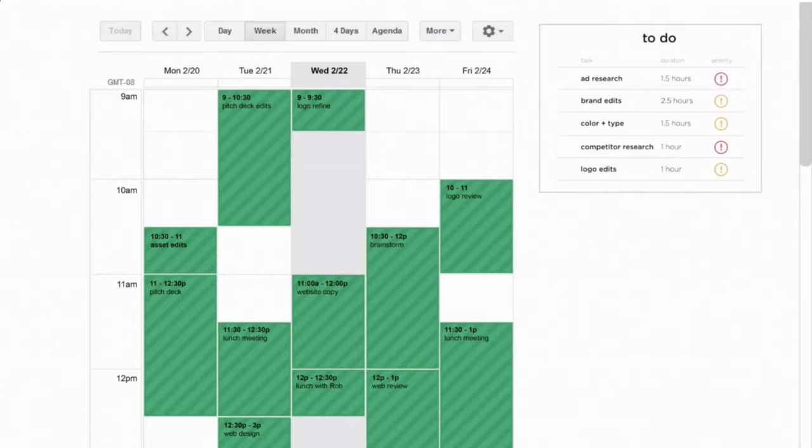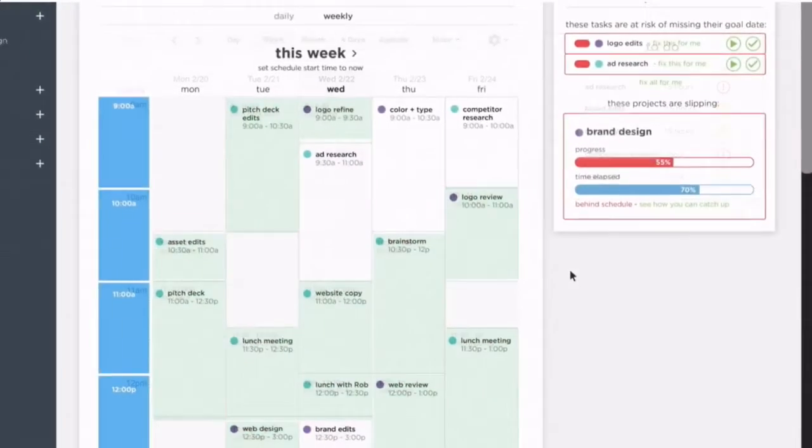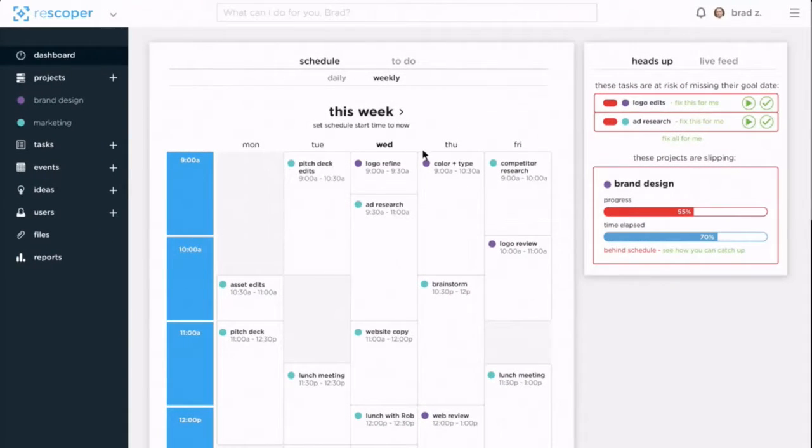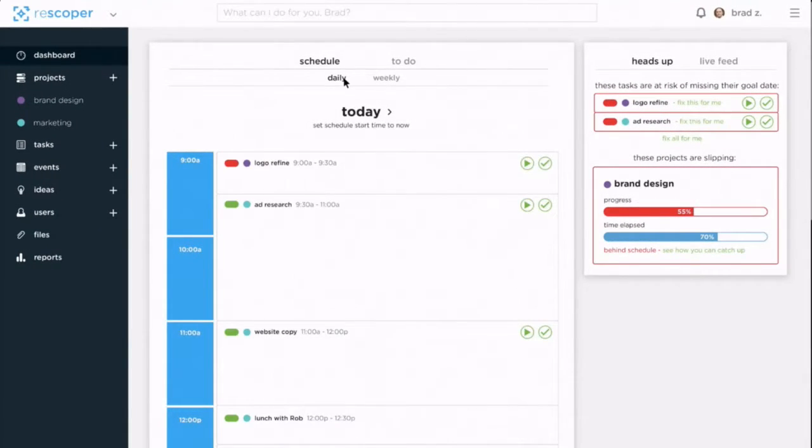Rescoper fills in the blanks in his calendar to create a productive schedule that he can use to get everything done on time. That way, Brad can arrive in the morning, grab his coffee, and get right to work. And Rescoper monitors Brad's progress and will give him a heads-up of any issues over on the right, whether his projects start slipping or he gets a little overworked for some due dates. Luckily, he can fix those issues with just one click.